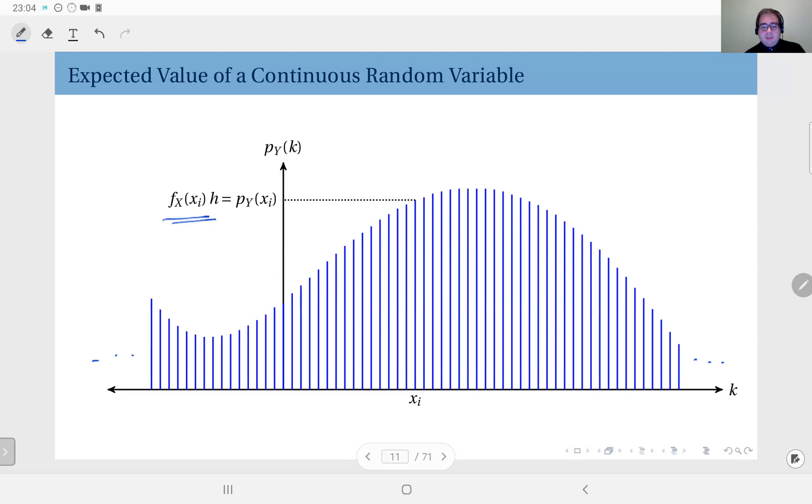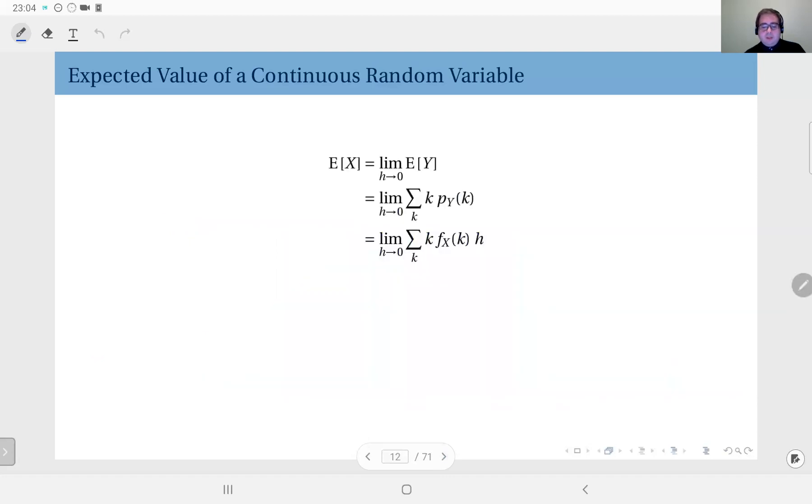We know when we have this discrete distribution how to compute its mean, and as h, the width of the discretization interval, goes to zero, we obtain the expected value of the actual continuous random variable.